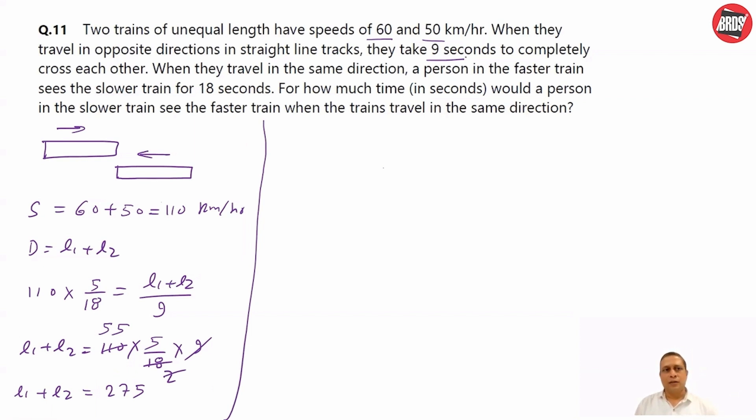Now, second thing. When they travel in same direction, person in the faster train sees the slower train for 18 seconds. So, let's say this is one train and this another train. They travel in same direction. Let's say the person is the engine driver. So, this train is crossing this train and this person sees one end of train. We can say in such case the distance is nothing but length of the slower train.